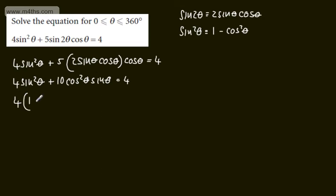If I do that, substituting this in, we've got 4 lots of 1 minus cos squared theta plus the 10 cos squared theta multiplied by sine theta and that's equal to 4.